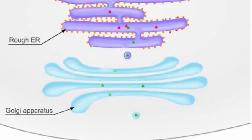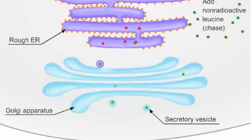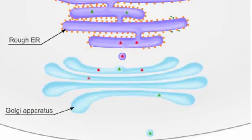The chase phase of the experiment begins with the addition of a very large dose of non-radioactive leucine to the culture medium. Newly synthesized proteins now lack the radiolabeled amino acid.